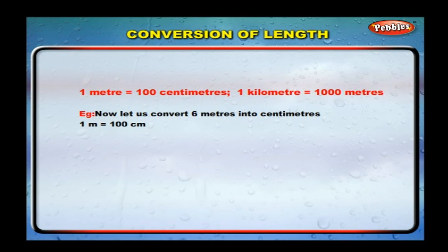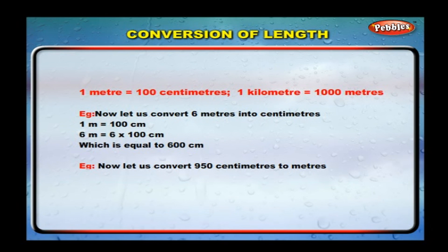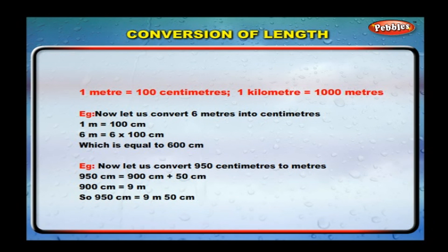Example: let us convert 6 meters into centimeters. One meter is equal to 100 centimeters, so 6 meters is equal to 6 × 100 = 600 centimeters. Now let us convert 950 centimeters to meters. 900 centimeters equals 9 meters, so 950 centimeters is equal to 9 meters and 50 centimeters.